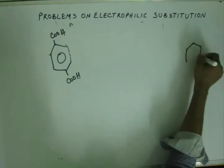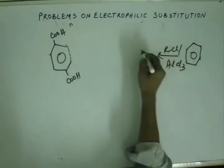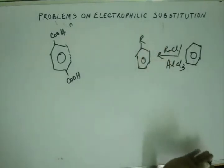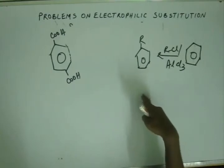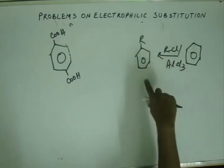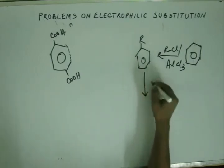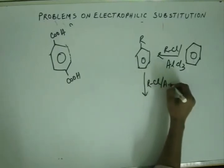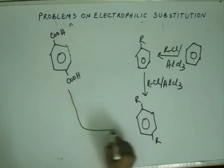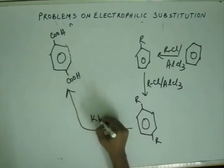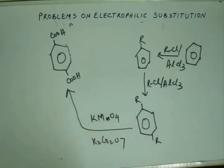From here it is a cakewalk to reach the desired product. Just carry out alkyl oxidation using any strong oxidizing agent like hot KMnO4 or K2Cr2O7. That will oxidize both Alkyl groups to Carboxylic acid groups, giving us the desired Benzene-1,4-dioic acid.